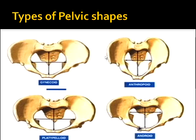Looking at the different shapes: the gynecoid pelvis has an inlet that is almost round. The transverse diameter is slightly larger than the anterior-posterior diameter, but the shape is almost round or almost equal.